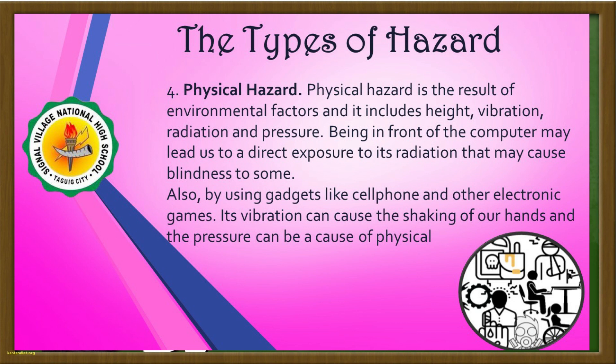Physical hazard. Physical hazard is a result of environmental factors and includes height, vibration, radiation, and pressure. Being in front of a computer may lead to direct exposure to radiation that may cause blindness in some. Also, using gadgets like cell phones and other electronic devices — their vibration can cause the shaking of our hands, and pressure can be caused physically.